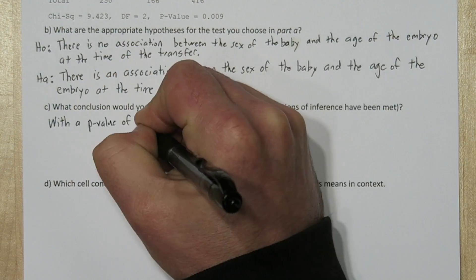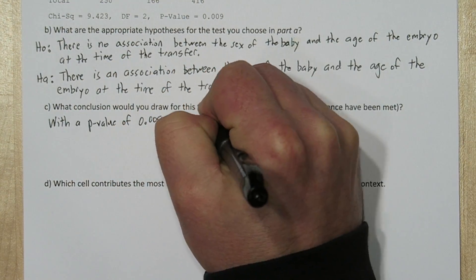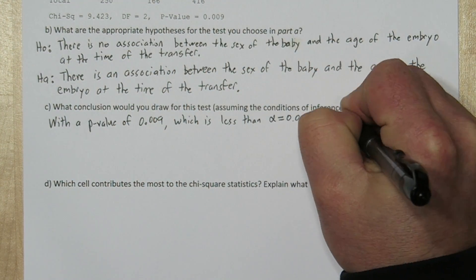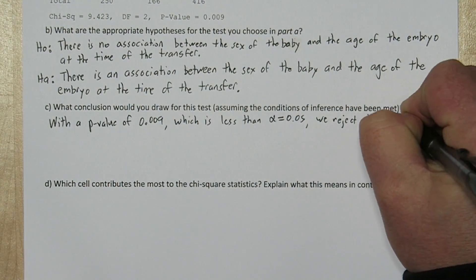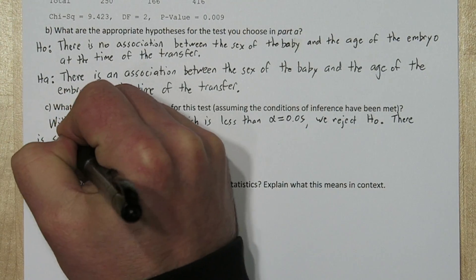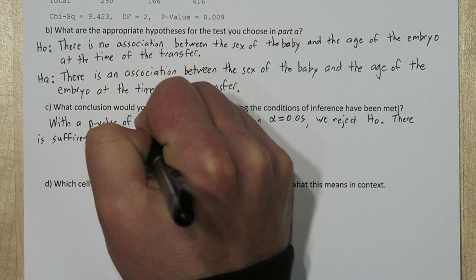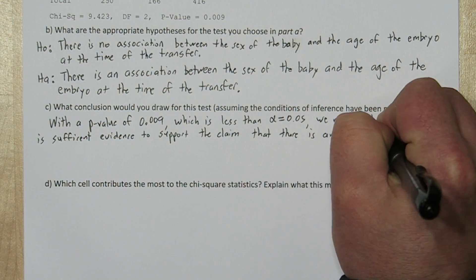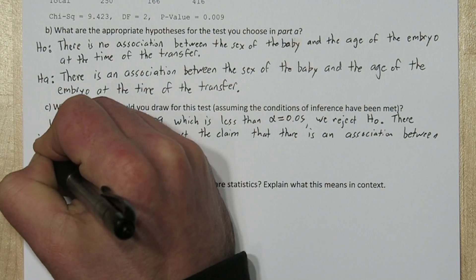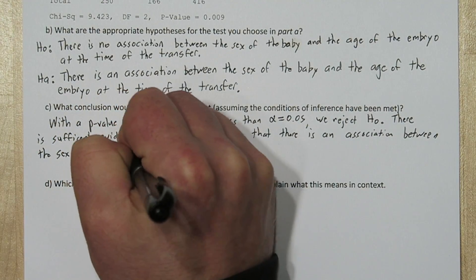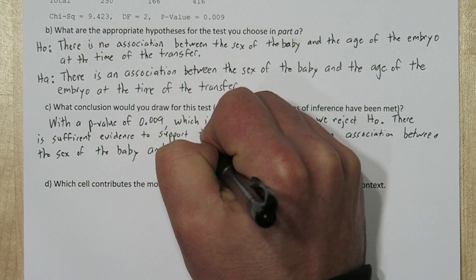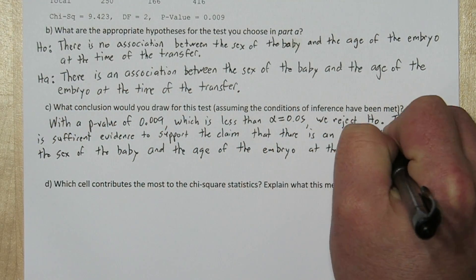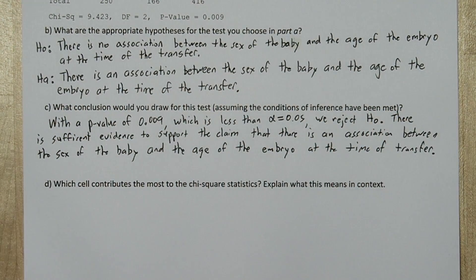With a p-value of .009, which is less than alpha equals .05, we reject the null hypothesis. There is sufficient evidence to support the claim that there is an association between the sex of the baby and the age of the embryo at the time of transfer.